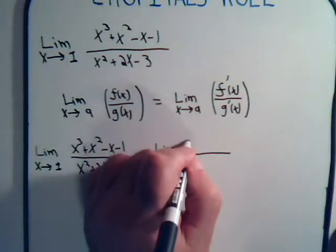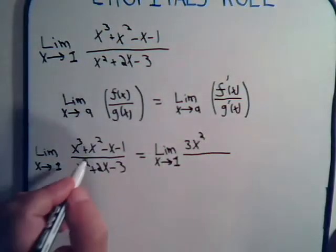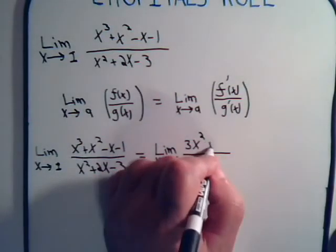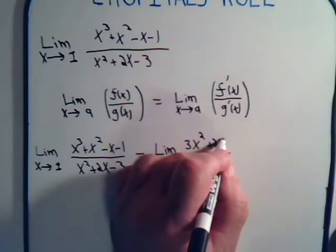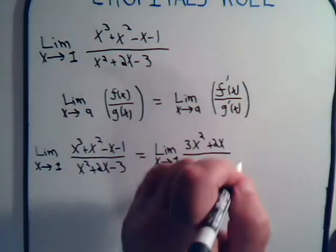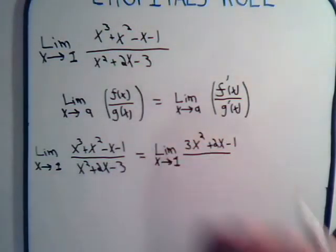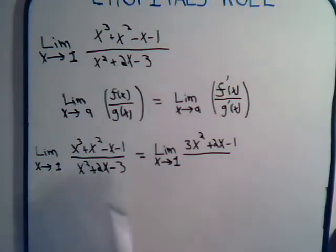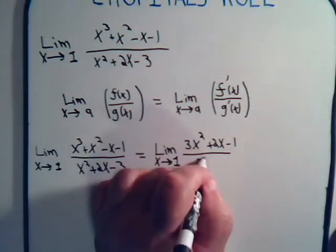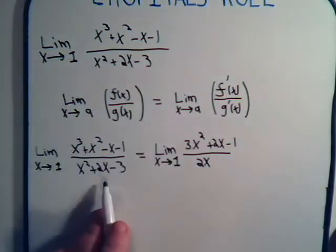Like this, 3x squared, and we're taking the limit, plus 2x minus 1. And the bottom part, that's going to be 2x plus 2.